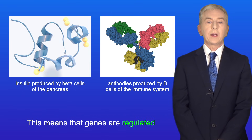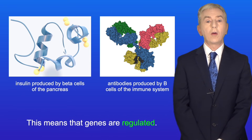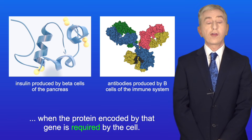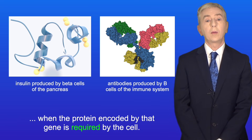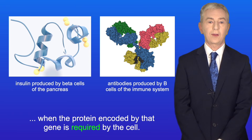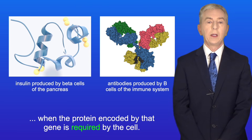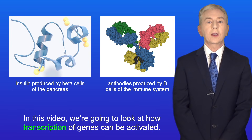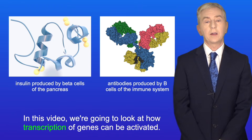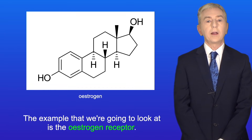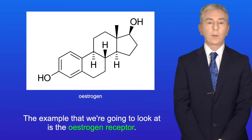So this means that genes are regulated. In other words genes are only transcribed when the protein encoded by that gene is required by the cell. In this video we're going to look at how transcription of genes can be activated, and the example we're going to look at is the oestrogen receptor.